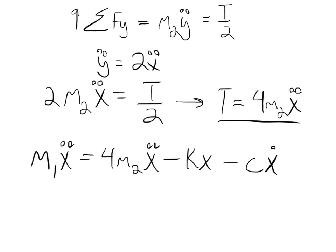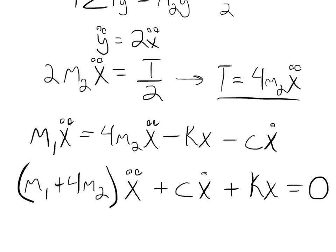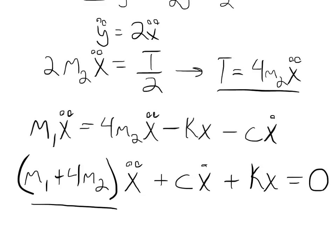And I end up with the overall equation of m1 plus 4m2 times x double dot plus cx dot plus kx is equal to 0. And this is the same equation we had earlier, except for we had mE in here. And that is mE as we found it by using equivalent mass ratio.